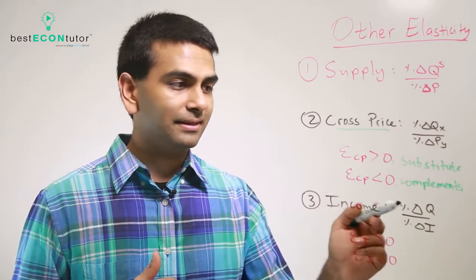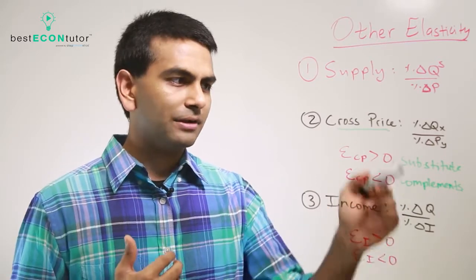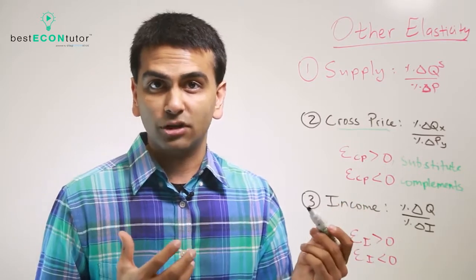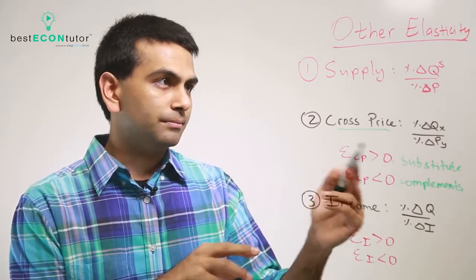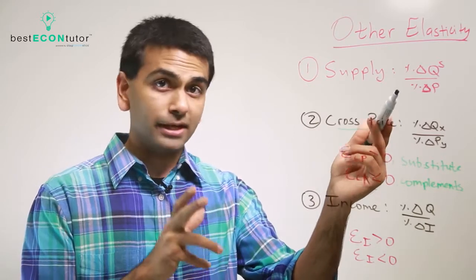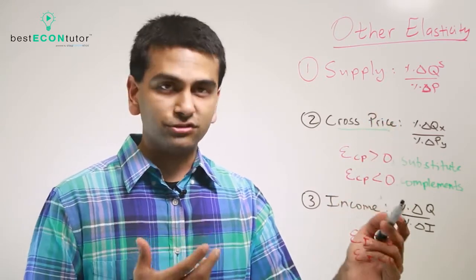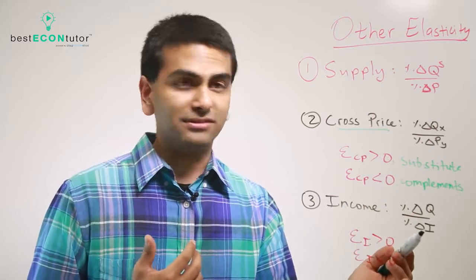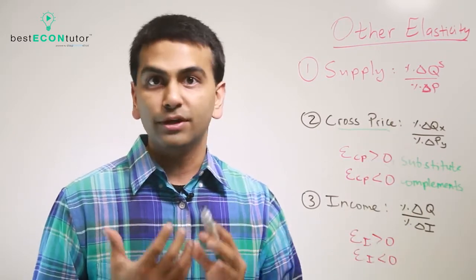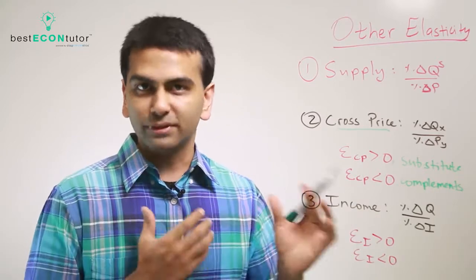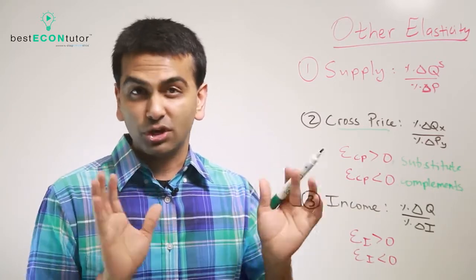Finally, income elasticity is the percent change in quantity over percent change in income. For all these elasticities, you can use the midpoint formula — difference over average — just like before. Even though it's income instead of price, if your income goes from twenty to thirty thousand, it's the difference of ten over the average of twenty-five, so you can always do it that way.